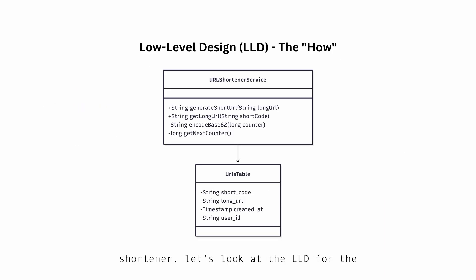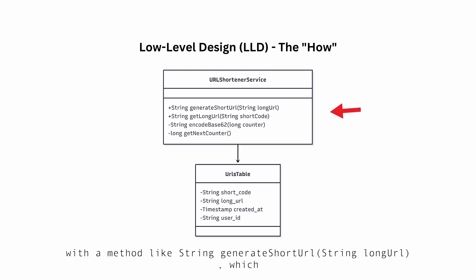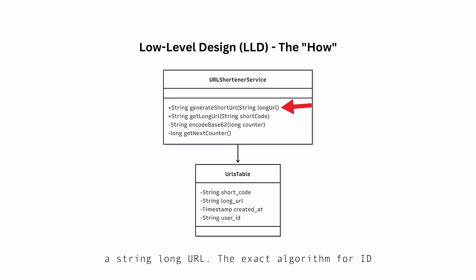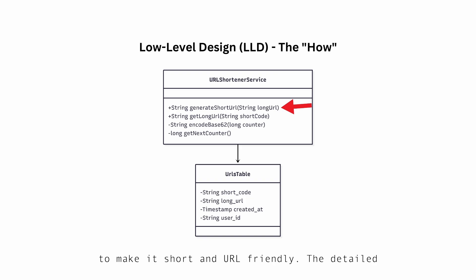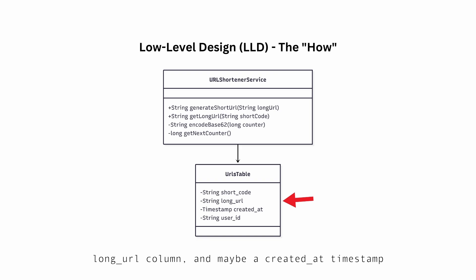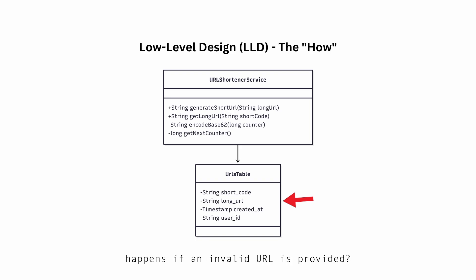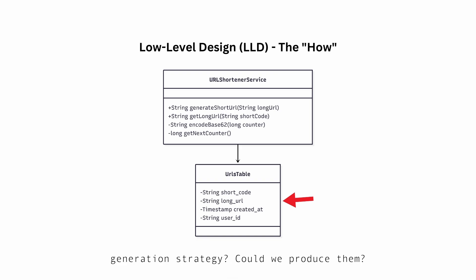Continuing our URL shortener example, let's look at the LLD for the shortening service. Here we would define specific classes and methods — like a URLShortenerService class with a method like `generateShortURL` which accepts a string long URL. We would define the exact algorithm for ID generation — for instance, using a global counter to get a unique integer ID and then converting it to a base64 string to make it short and URL-friendly. The detailed database schema for our URLs table would include a shortcode column as the primary key, a long URL column, a created-at timestamp, and specific error handling logic — like what happens if an invalid URL is provided, and how we handle potential collisions in our generation strategy.